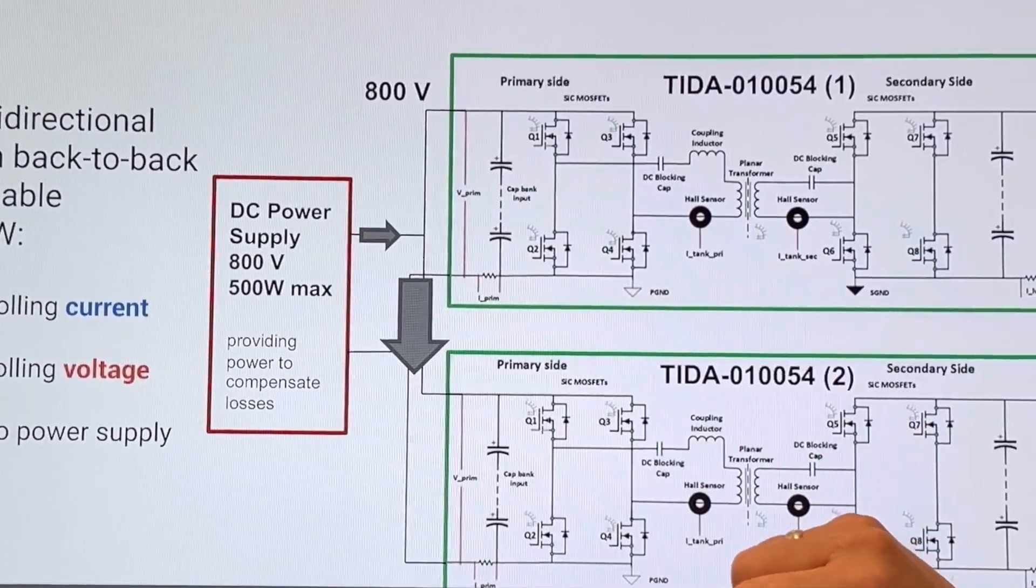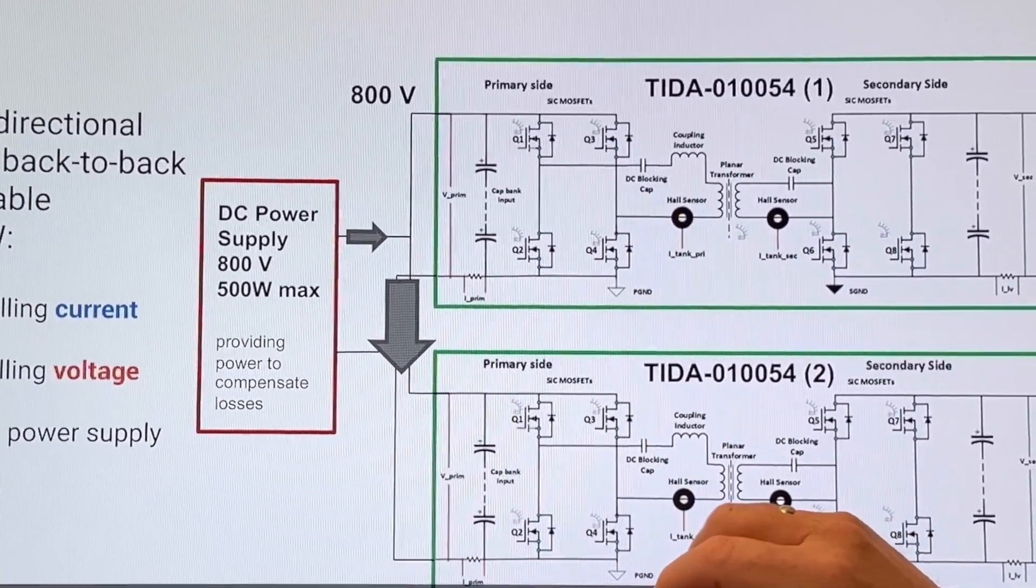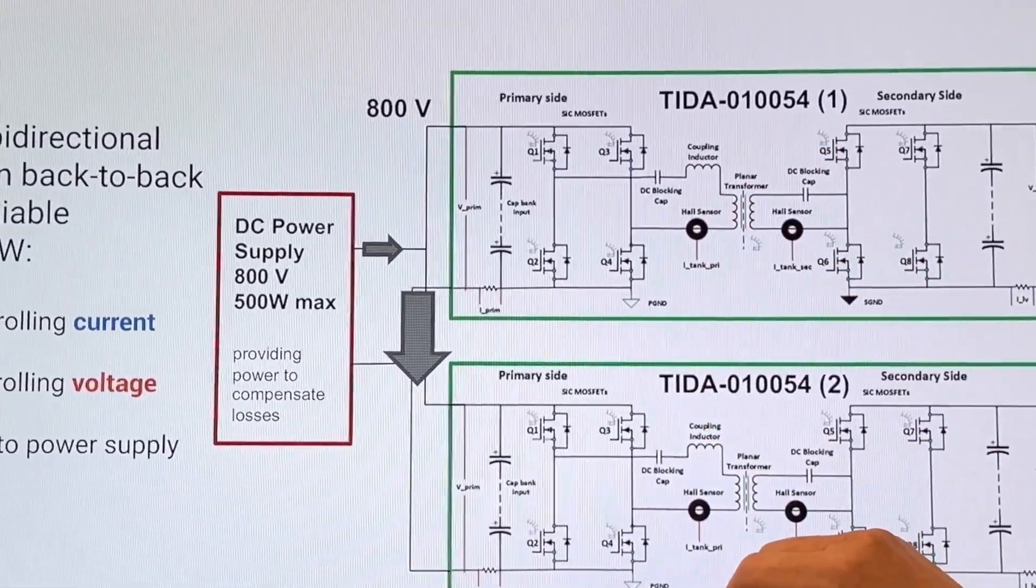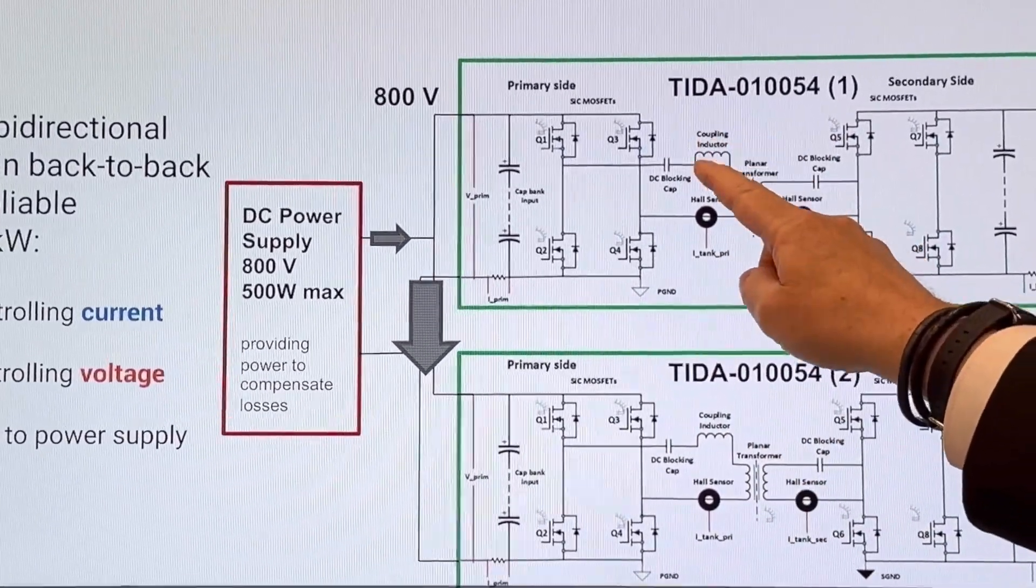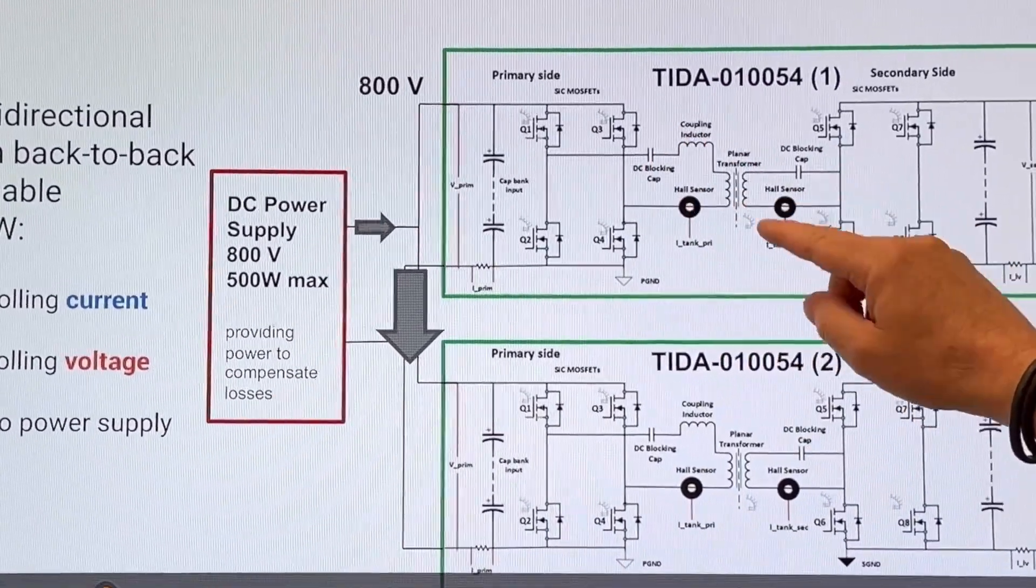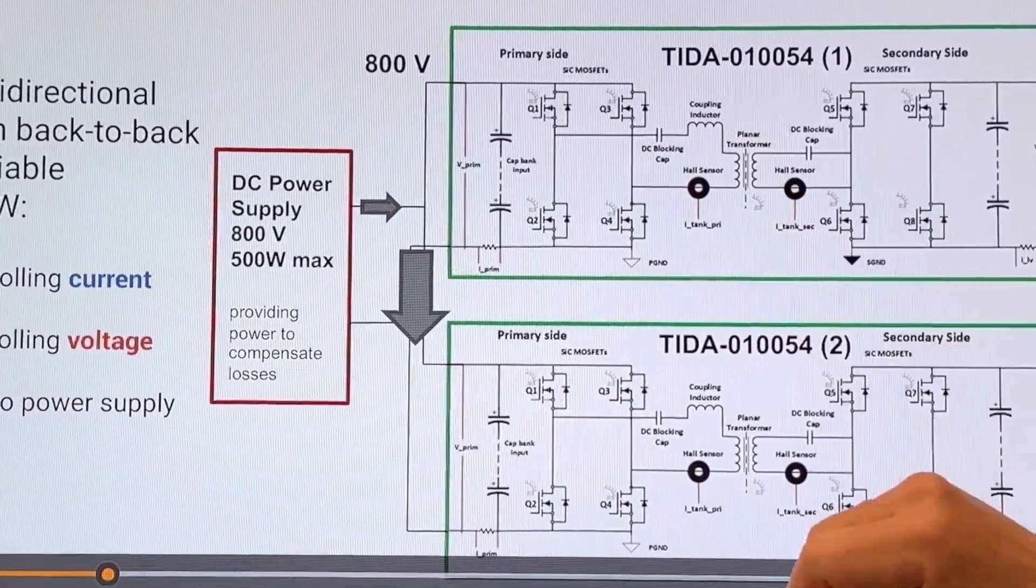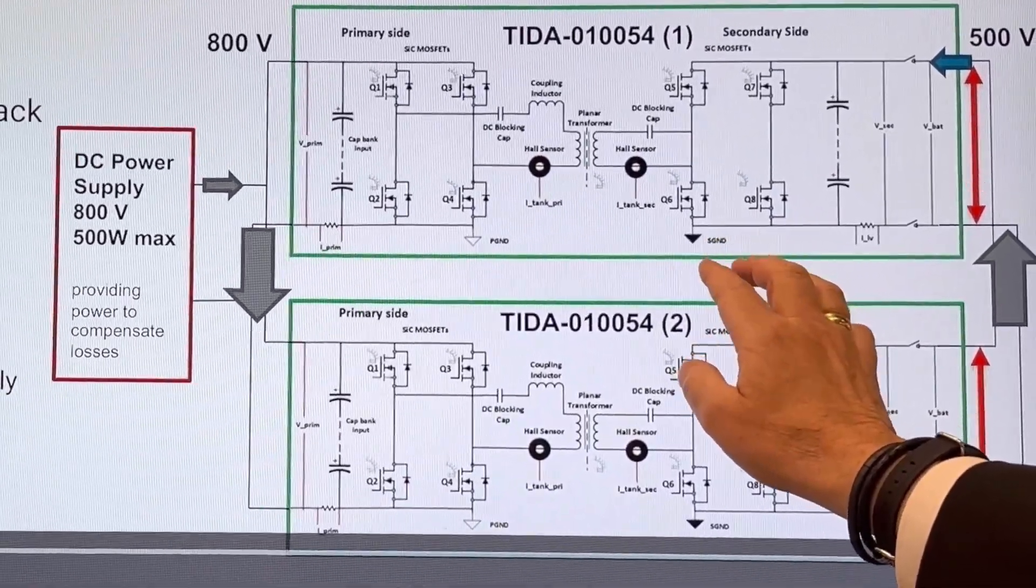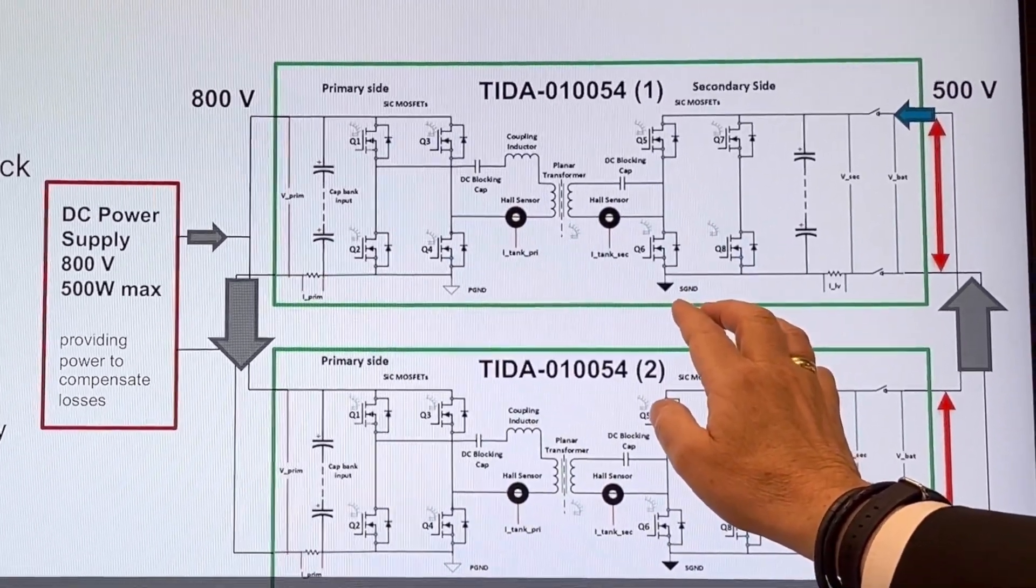It is realized by a full bridge on the primary side, and this is being built in silicon carbide MOSFETs. Then you see in the middle a transformer which is providing all the isolation. You see the coupling inductor here as well and blocking capacitors to make sure that the transformer is not DC-seconded.